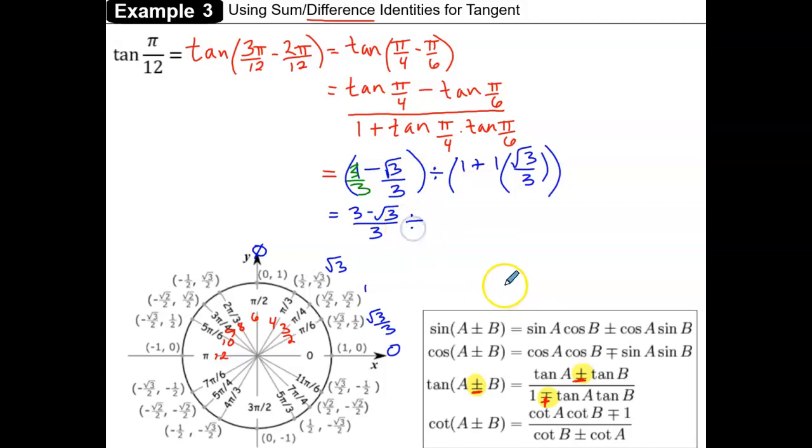Then I'm dividing by, and we're going to simplify this second expression. 1 times root 3 over 3 is just root 3 over 3, and like we did in the first term, we're going to change that 1 to a 3 over 3 so that we can combine these fractions, and we'll have 3 plus the square root of 3 over 3.